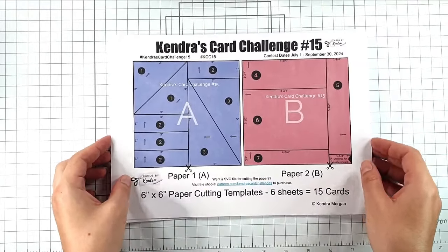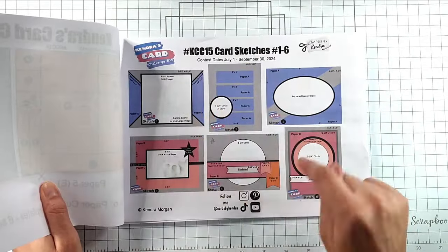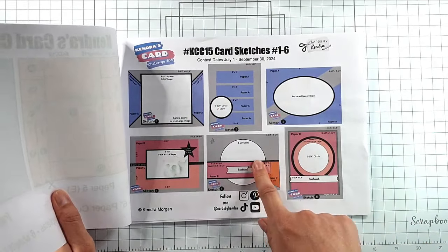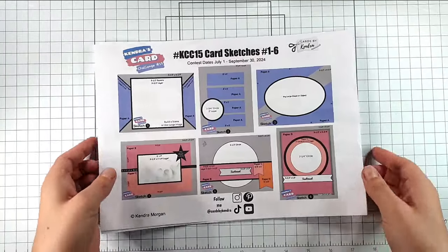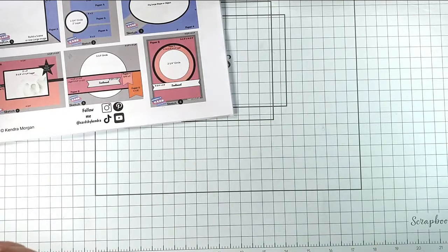So if you follow along on the crop today, then you'll see every one of those 15 cards being made. We're making number five here, so that'll give you lots of ideas. So let's get started on this and I'll tell you a bit more about the challenge and the prizes to be won as we go.